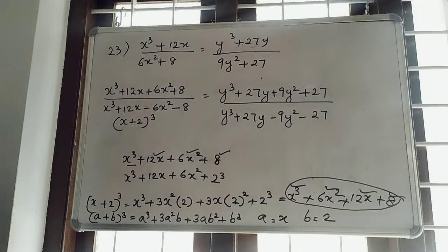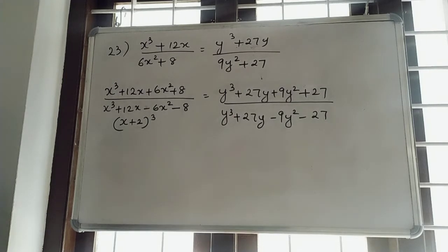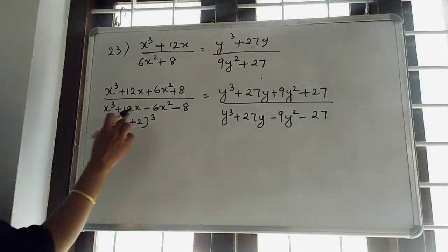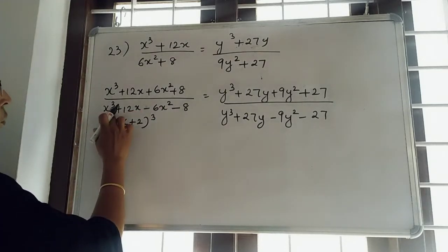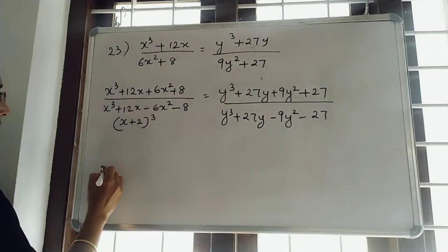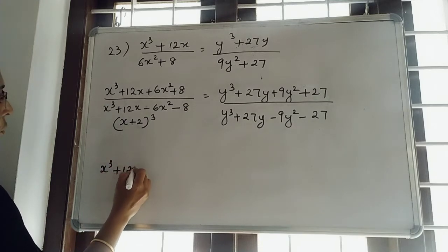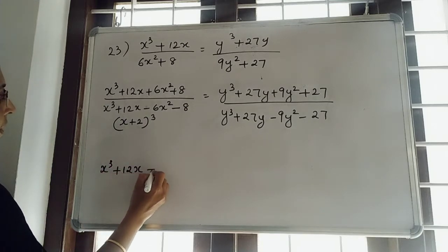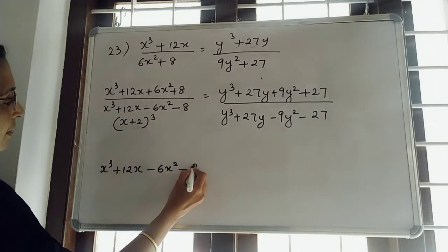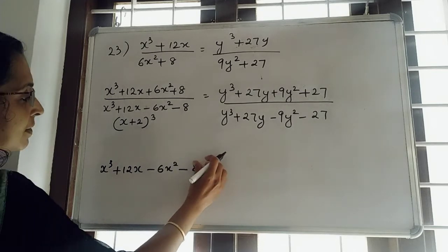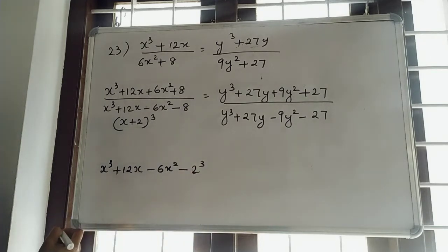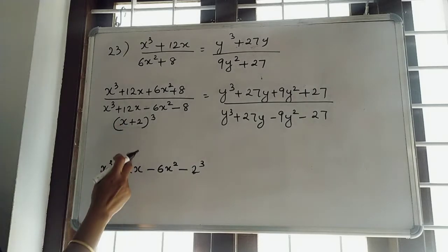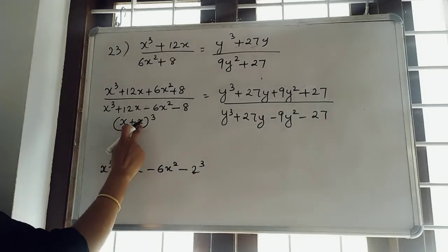Then the denominator. For the denominator: x³ + 12x − 6x² − 8. That 8 we can replace as 2³. So, same as the numerator pattern, we can write this as (x − 2)³.